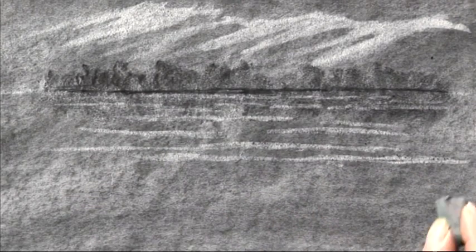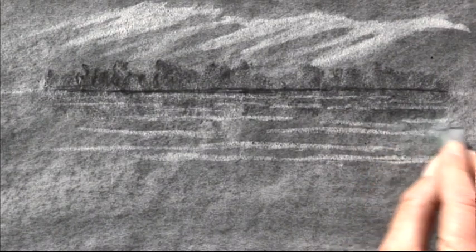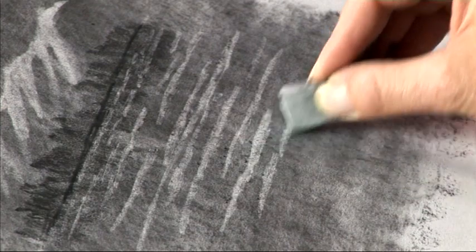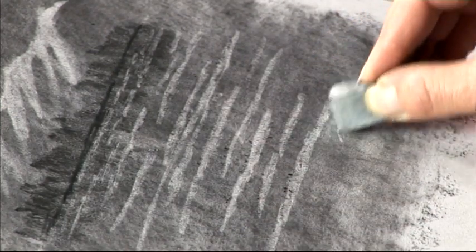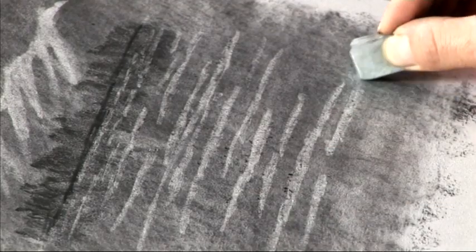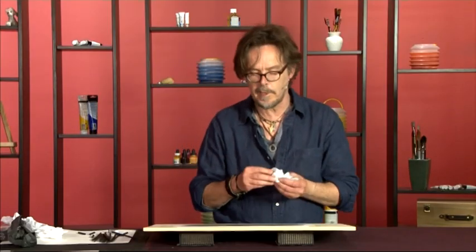So remember depth in a painting is created by tonal values. The sharper the tonal values, then the more an object comes towards you. The greyer in tone the further away it goes. So just continue down to the foreground where our shoreline will be. And again just take the kitchen paper and just waft off the excess eraser crumbs.